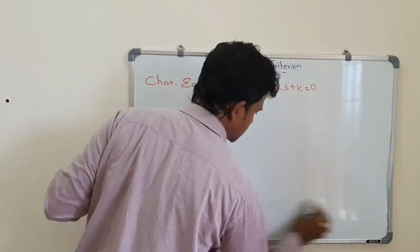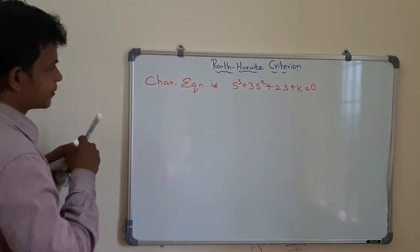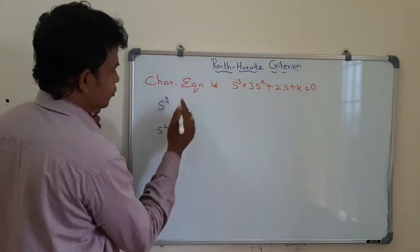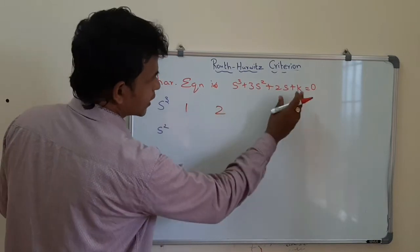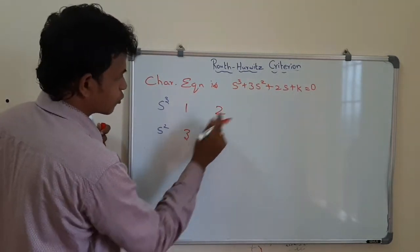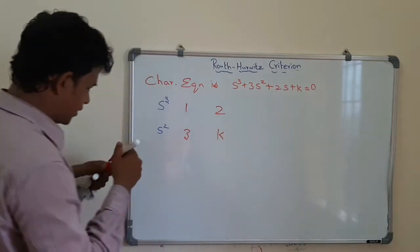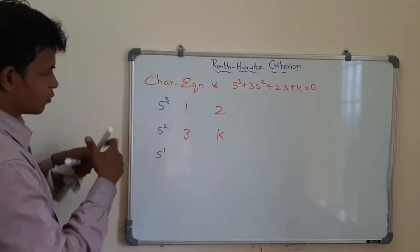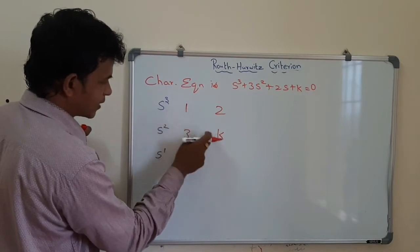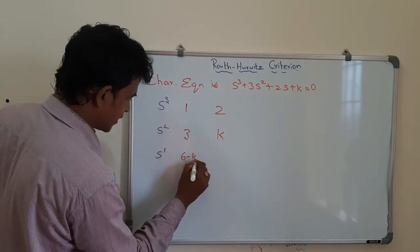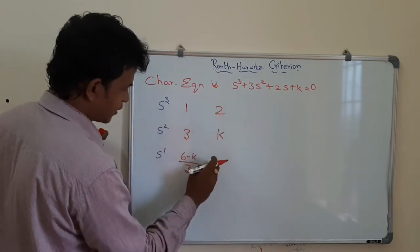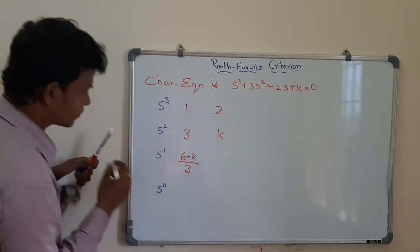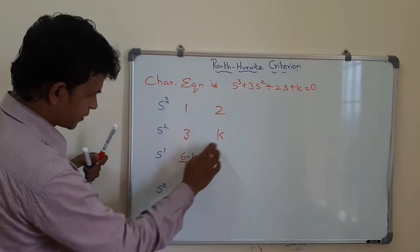We have the characteristic equation. The highest degree polynomial is s³. We apply the Routh-Hurwitz criterion. For the s³ row the coefficient is 1, for s² the coefficient is 3, for s¹ we compute (3×2 minus k×1) divided by 3, which gives (6 minus k) divided by 3, and for s⁰ the value is k directly.